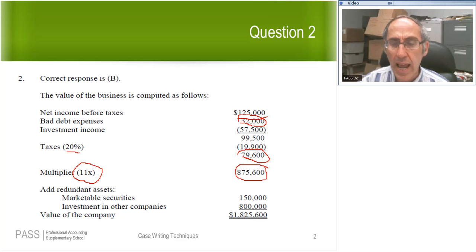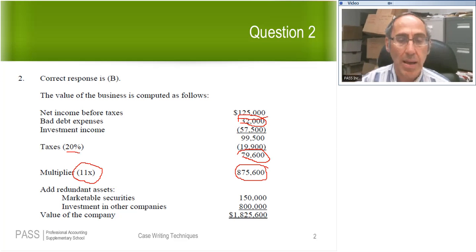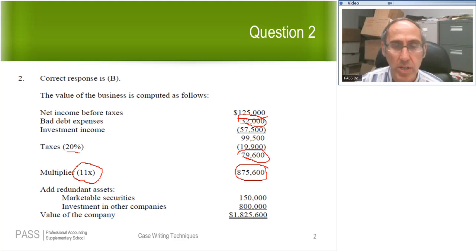Now, you were told to use a multiplier of 11, so you multiply 11 by the maintainable earnings. The $79,600 is a maintainable earnings after I made the adjustments we just discussed. The value of the core business is $875,600. The next step is to add back the redundant assets.